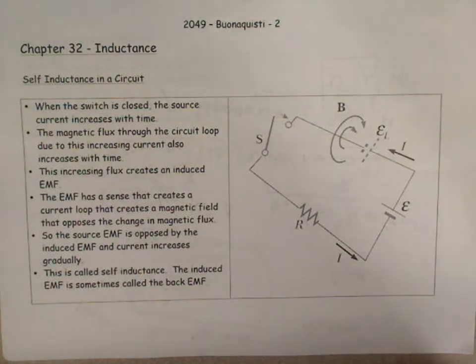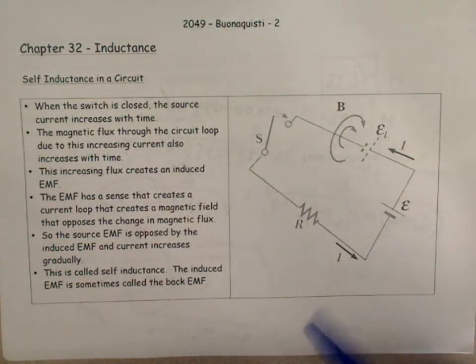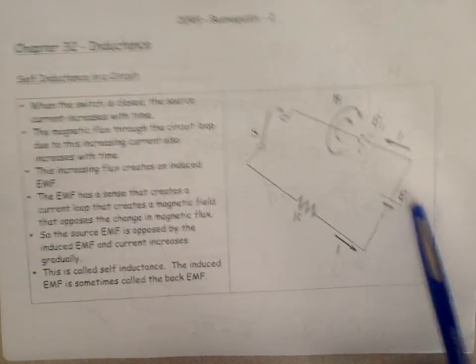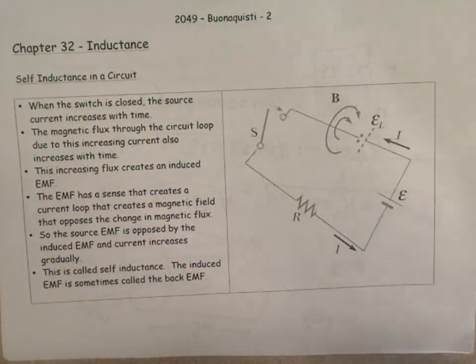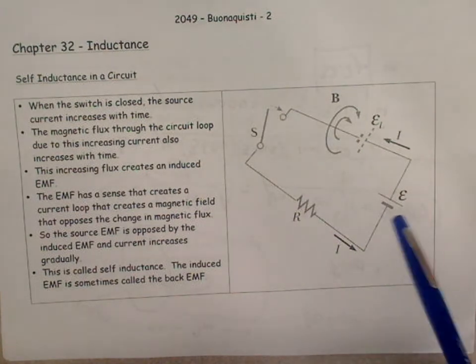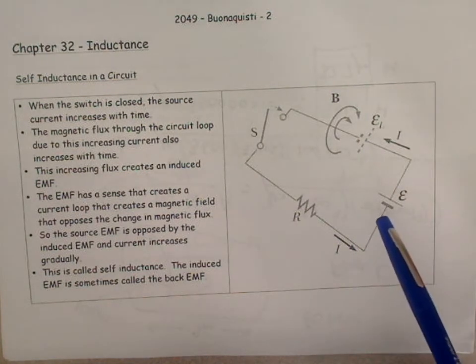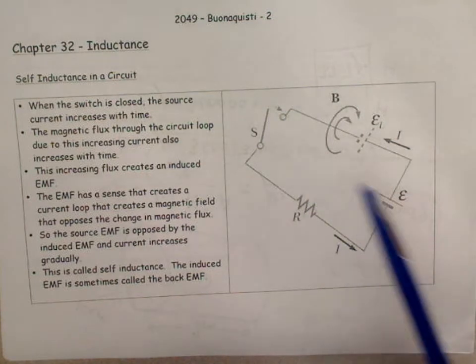Here we have a diagram showing a simple circuit. It consists of a switch, a resistor, and a battery on this side. The circuit is energized by closing the switch.